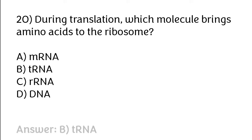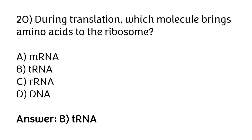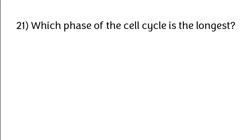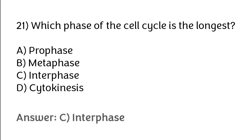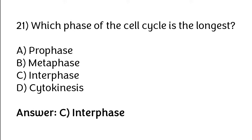During translation, which molecule brings amino acids to the ribosome? Options: mRNA, tRNA, rRNA, DNA. The correct answer is option B — tRNA brings amino acids to the ribosome. Which phase of the cell cycle is the longest? Options: prophase, metaphase, interphase, cytokinesis. The correct answer is option C — interphase is the longest phase of the cell cycle.